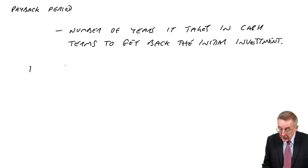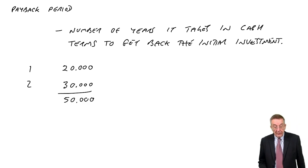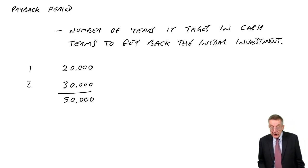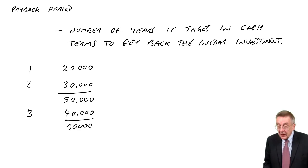After one year, we've got back £20,000. That's not enough, we need another £80,000. After two years, we get another £30,000, so we've now had a total of £50,000. Still not enough. After three years, we get back another £40,000, so we've now had a total of £90,000. We're nearly there, but we've still not got back the full £100,000.